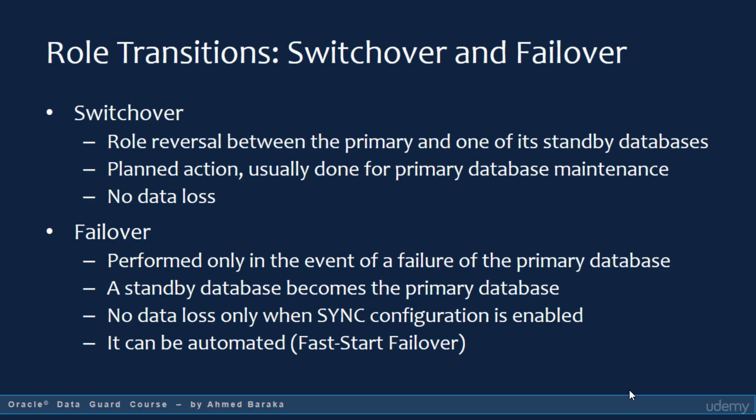When switchover takes place, no data is lost. Failover is performed only in the event of a failure of the primary database. One of the standby databases becomes the primary database, and the primary database is supposed to be unavailable. Failover is a reaction to an incident — it is not planned. In case of failover, you will not lose data only if you were using the sync configuration; if you are using an asynchronous configuration, some data will be lost. Failover can be automated using a feature called fast start failover, which we will cover in a separate lecture.